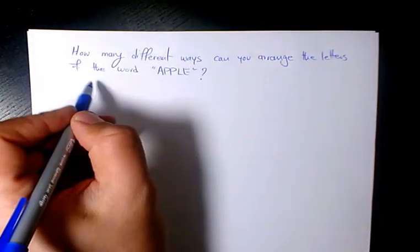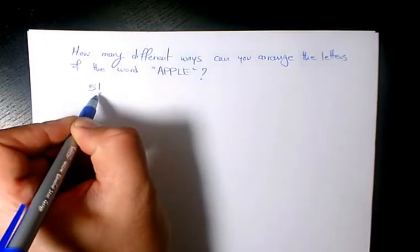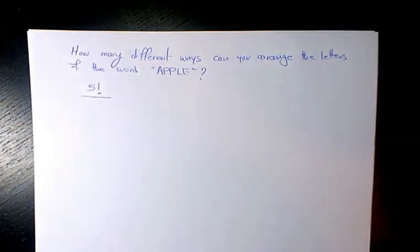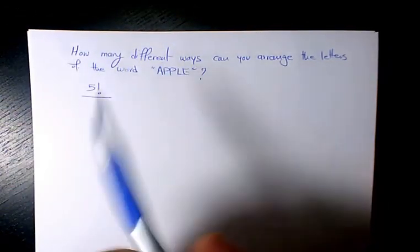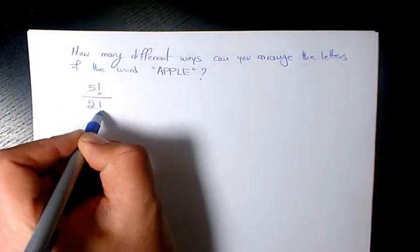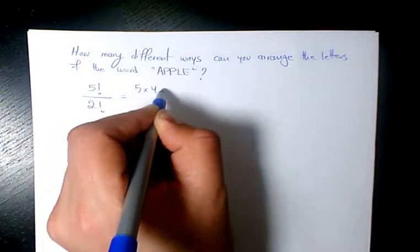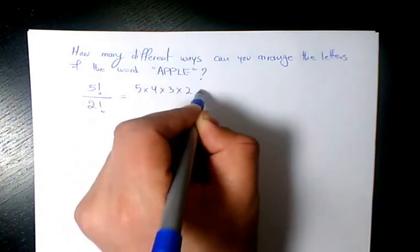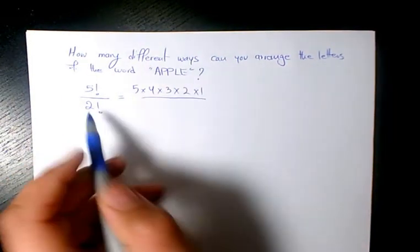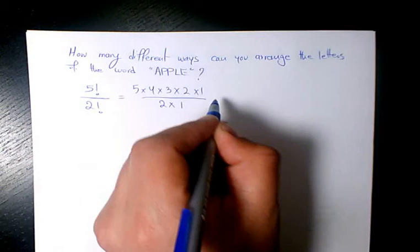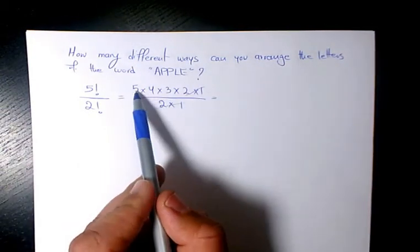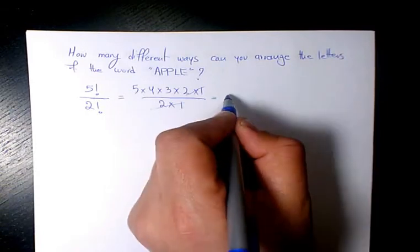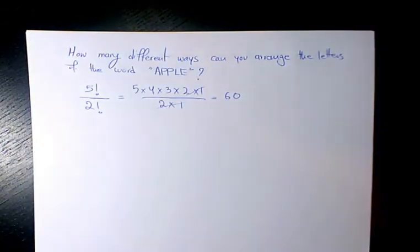So it's going to be 5 factorial divided by, since these two letters are the same, we have 2 factorial. So it's going to be 5 times 4 times 3 times 2 times 1 divided by 2 factorial, which is 2 times 1. These two cancel out and it will be 5 times 4 times 3, which is 60 different ways to write APPLE.